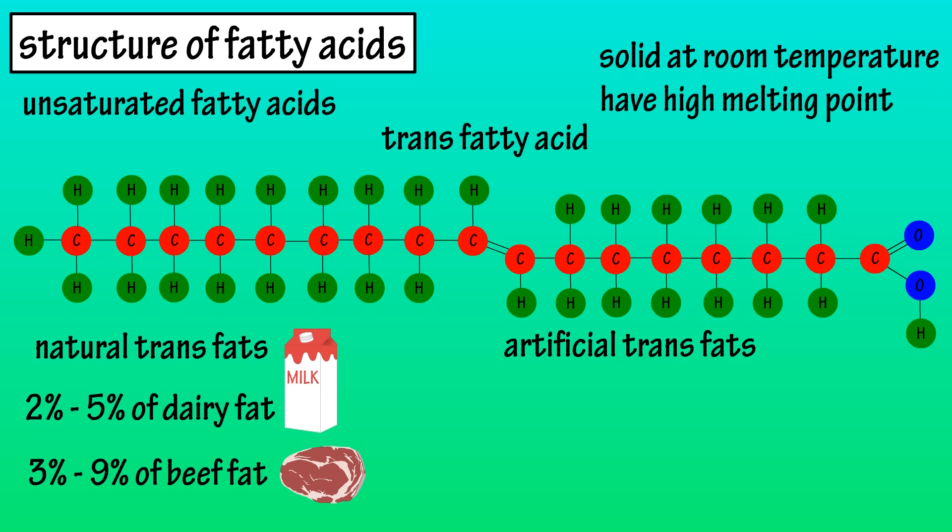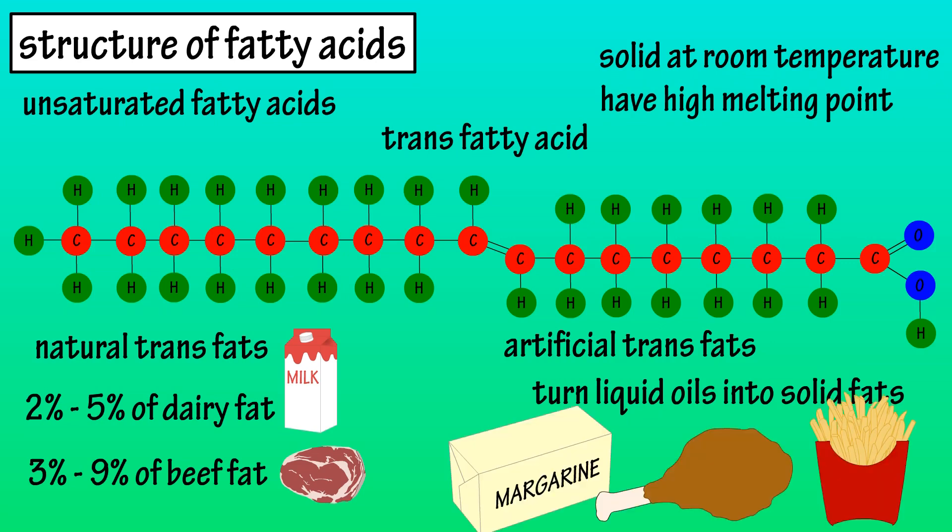Artificial trans fats are formed when manufacturers turn liquid oils into solid fats through a process called hydrogenation. Hydrogenation is a process by which vegetable oils are converted to solid fats simply by adding hydrogen atoms. Some foods that contain trans fats include stick margarines, fried foods, and many fast food items.